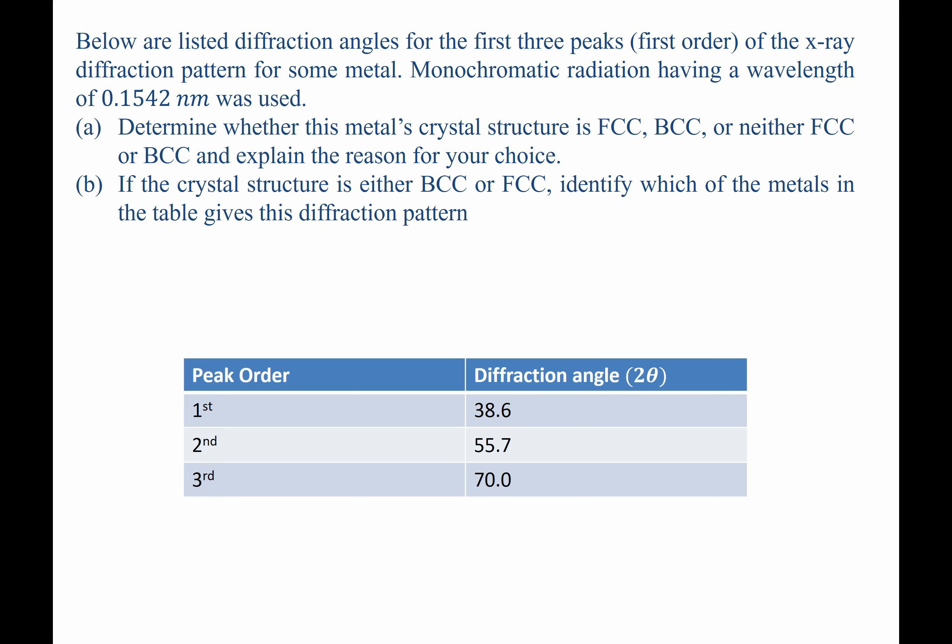For this question, we are given the listed diffraction angles for the first three peaks of x-ray diffraction, assuming first-order reflections, for some metal. Monochromatic radiation with a wavelength of 0.1542 nanometers is used. The question asks us to determine whether the crystal structure for the metal is FCC, BCC, or neither FCC nor BCC, and to give a reason for this choice. Part B asks us, if the crystal structure is BCC or FCC, to identify which of the metals in a table gives this diffraction pattern.